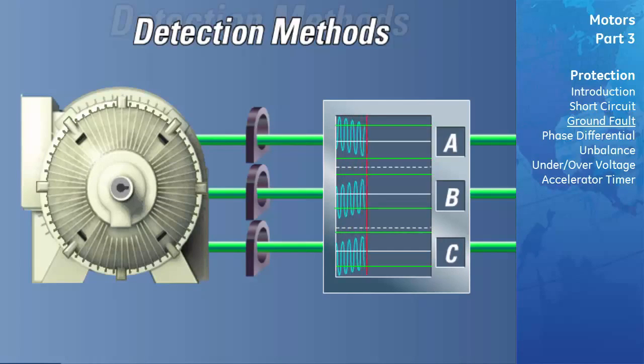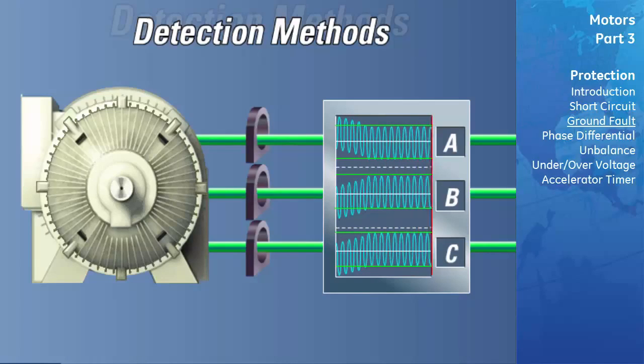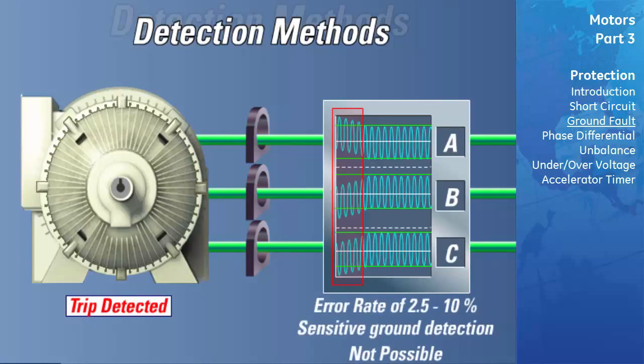During motor start, the motor's phase currents typically rise to magnitudes in excess of six times the motor's full-load current. The slight mismatch of the differential CTs, combined with the relatively large phase current magnitudes, produce a false differential current which will be seen by the relay. This current will be misinterpreted by the relay as a ground fault unless the ground fault element's pickup is set high enough to disregard this error.